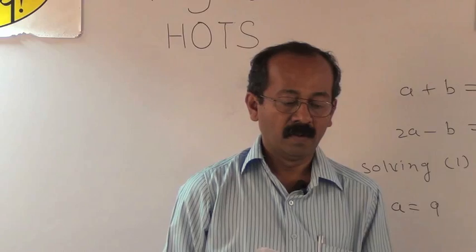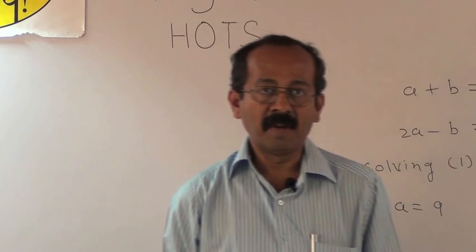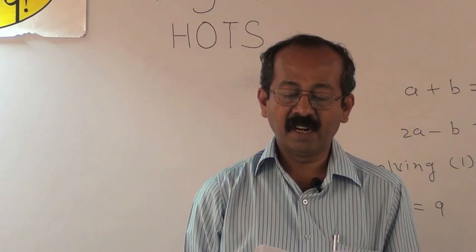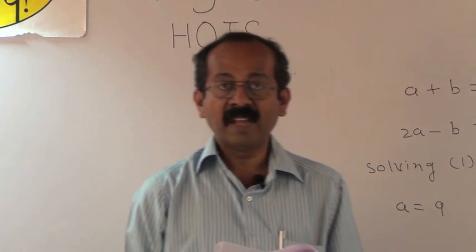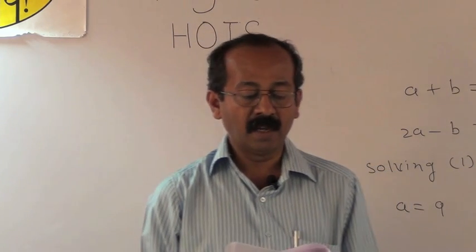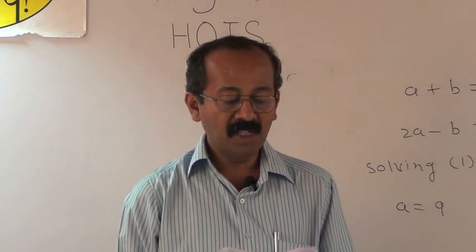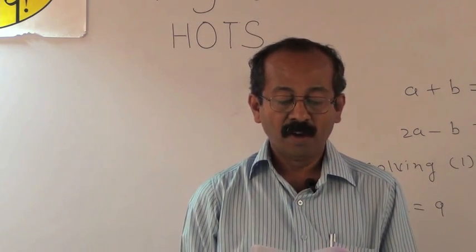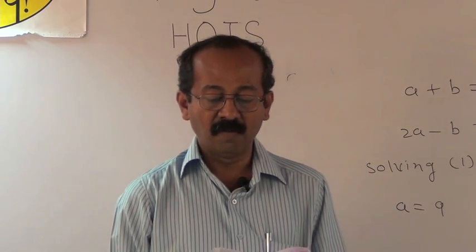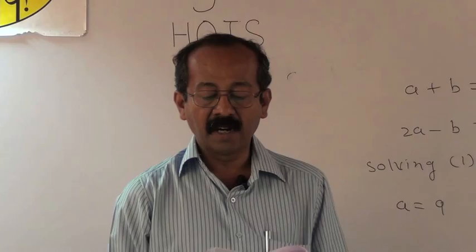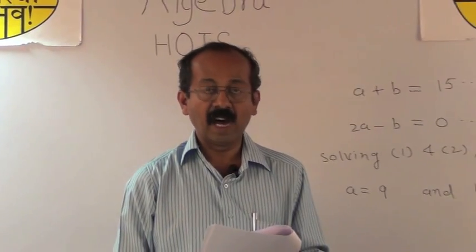One more example, based on simultaneous equation. Two vessels contain mixture of acid and water. In one there is twice as much acid as water, and in the other three times as much water as acid. How much liquid must be drawn off from each to fill a third vessel which holds 15 liters in order that it contains may be half acid and half water?